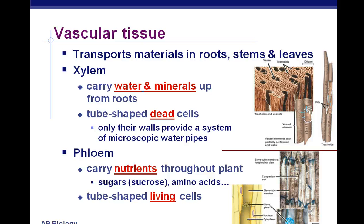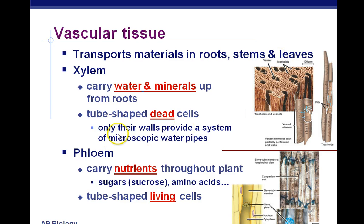Vascular tissue: there are two types and you need to know both. Xylem carries water and minerals up from the roots; it's made of tube-shaped dead cells of sclerenchyma. Only their walls remain, providing a system of microscopic water pipes. Phloem carries nutrients throughout the plant — especially sugars like sucrose, which is glucose and fructose made by photosynthesis — as well as amino acids. Phloem cells are living cells, so phloem is probably not made of sclerenchyma.